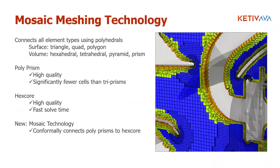So what is mosaic meshing technology and why does it matter? The word mosaic comes from mosaic flooring — combinations of tiles and glass with very nice patterns. Mosaic meshing allows you to transition between different types of elements in different sections of your computational domain using transition layers of polyhedral cells. Why do I need different elements in different sections? Because it's not one size fits all.